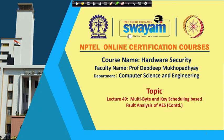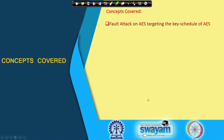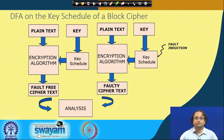Welcome to this class on hardware security. Today we shall be looking into how a fault affects the key schedule of a block cipher, specifically with respect to the AES algorithm. This is what we will be covering today: how to perform a fault attack on AES targeting the key schedule. These are a recapitulation of what happens in a fault attack scenario, in particular in the context of differential fault attacks.